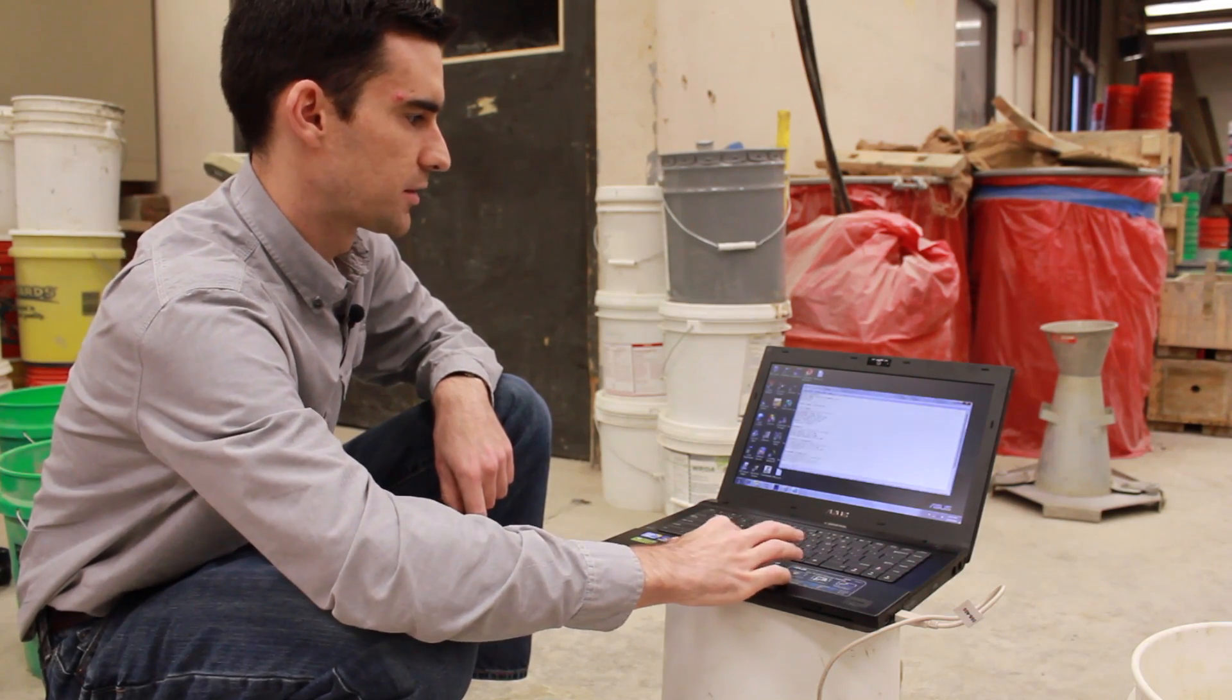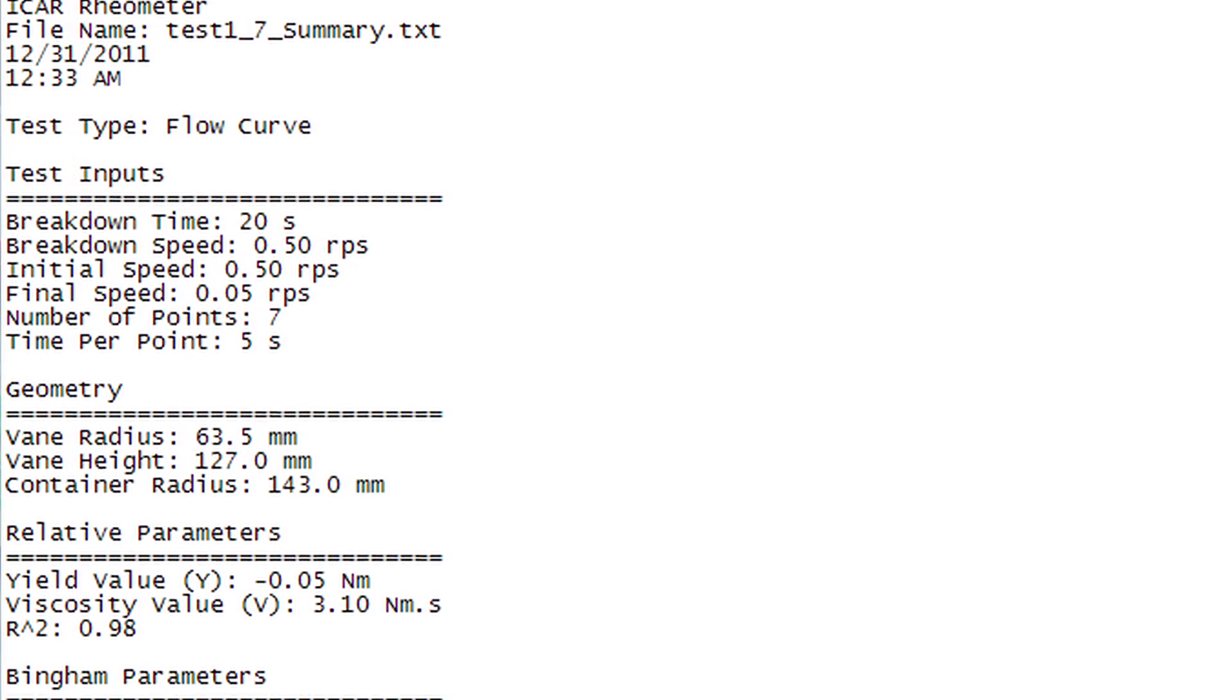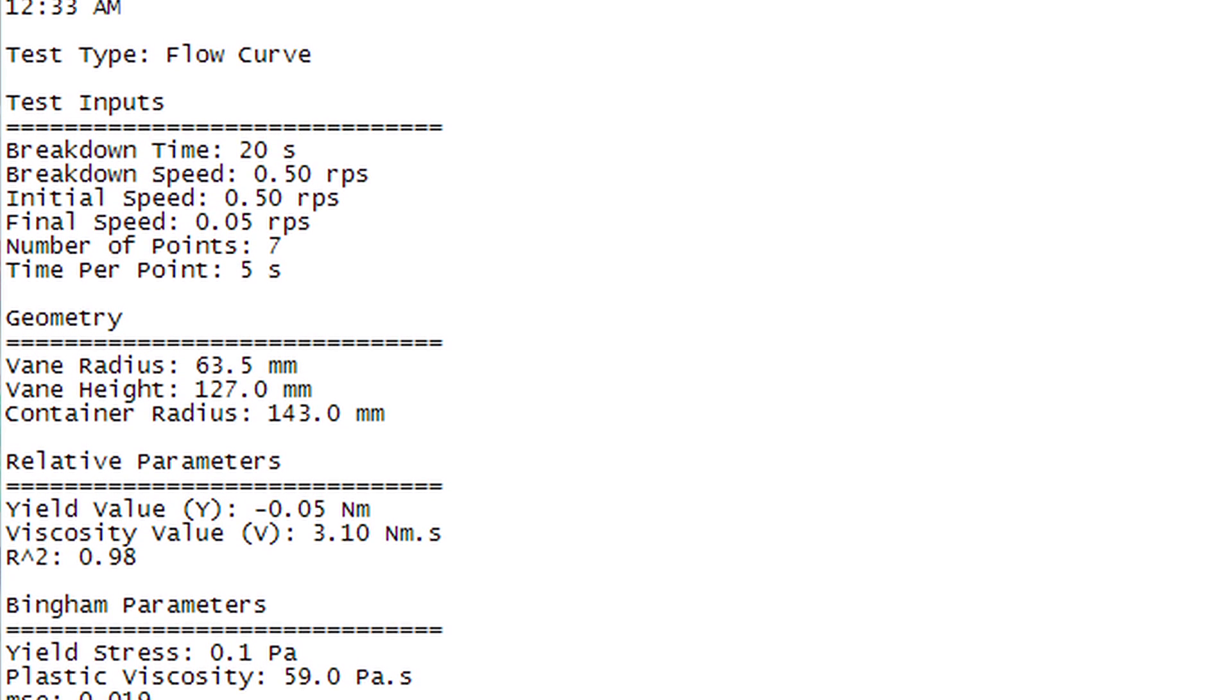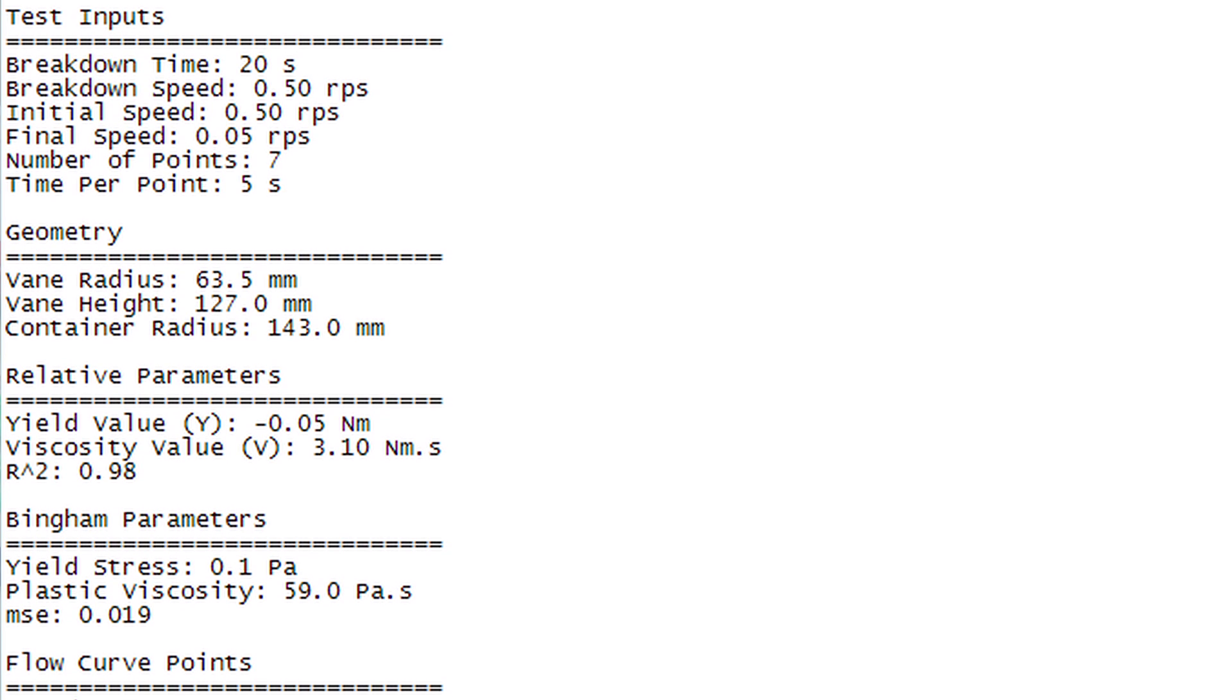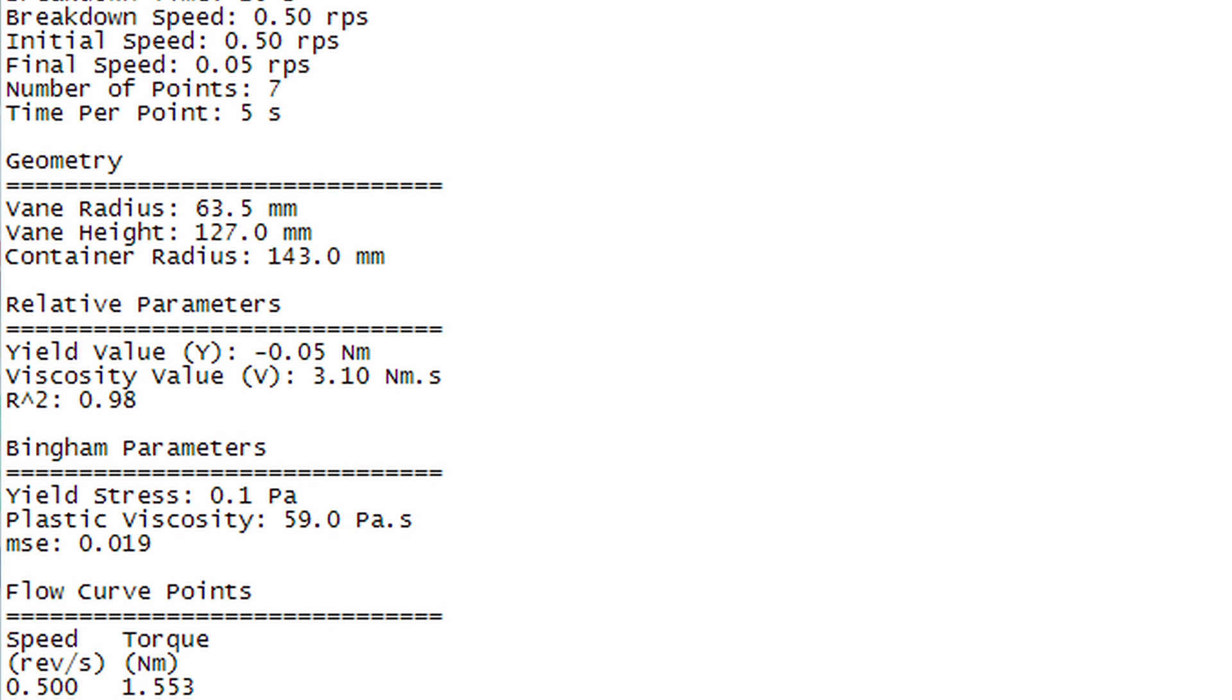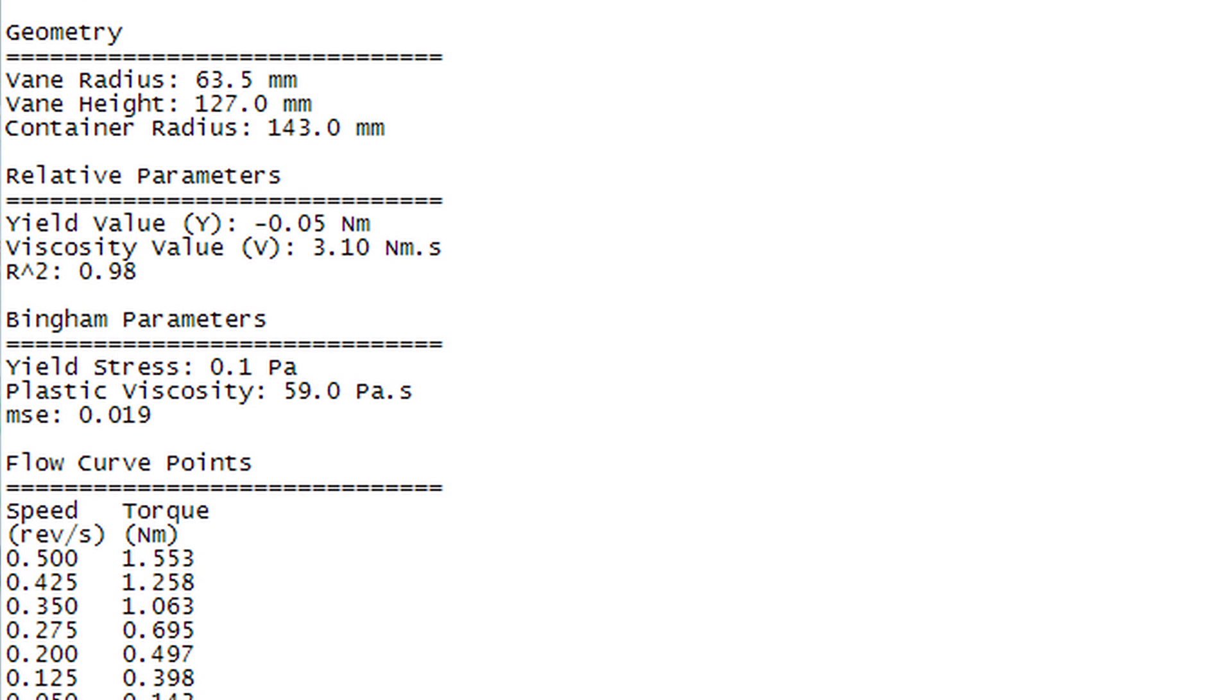For the flow curve test, it starts with the file name, the date and time. It has the test input, our breakdown time and speed, our initial and final speeds, the number of points, the time per point. It has the geometry. It then calculates the relative parameters, our Y and V, and our Bingham parameters of yield stress and plastic viscosity. It then has the flow curve points, the different speeds and the average torque recorded at each speed.